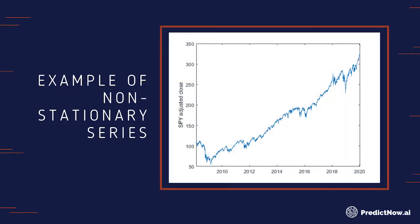Here is an example of a non-stationary time series. It's simply the SPY closing price adjusted for splits and dividends over the last 10 to 11 years. As you can see, SPY has been in a huge bull run since the financial crisis, and whatever stationarity test you apply to it, it will fail. It is simply not stationary.